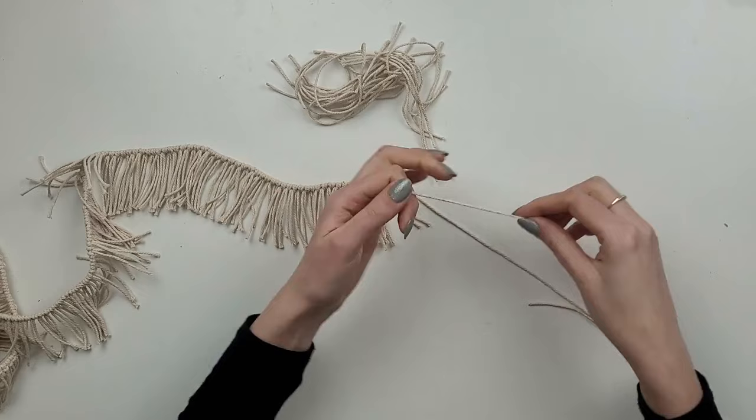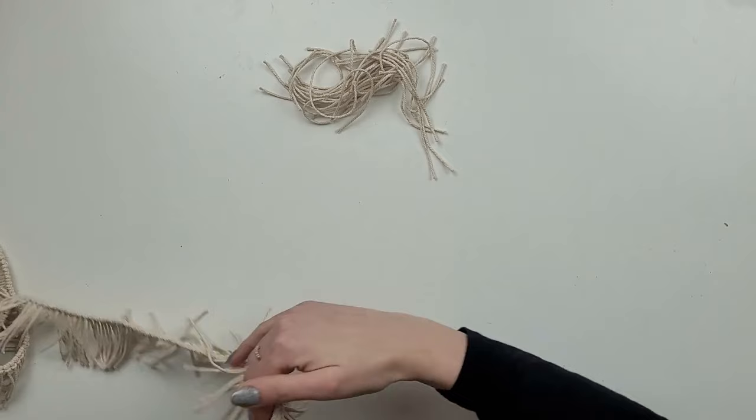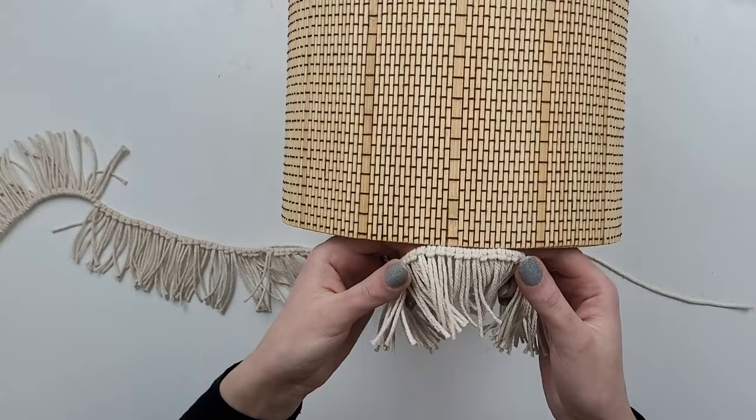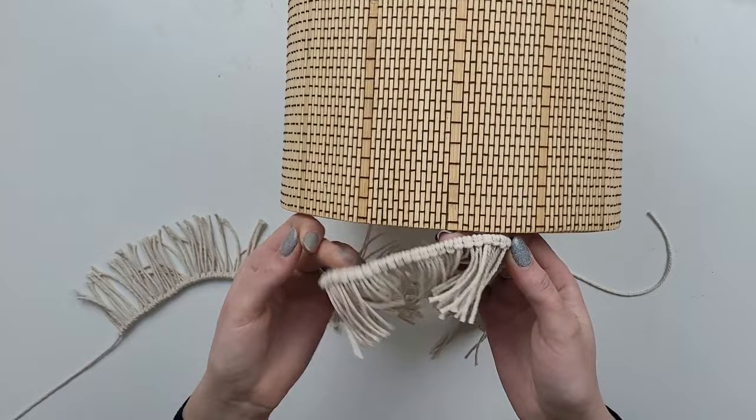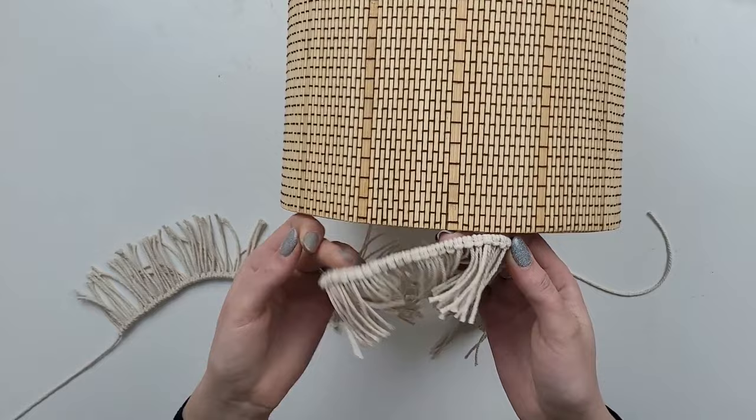To add more of the boho vibe, I make the fringe at the bottom of the lampshade. Using lark's head knots, I attach small pieces of cords to one long one. Once the whole length is covered, I brush the cords out, trim them to the same length, and glue to the bottom of my lampshade.